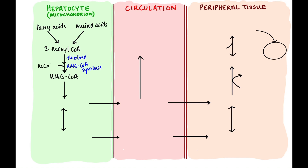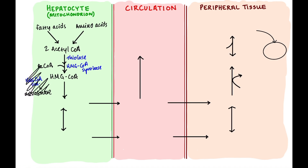Another acetyl-CoA comes in to make HMG-CoA. Now, HMG-CoA is also involved in cholesterol synthesis — there, HMG-CoA reductase makes mevalonate. But this is a completely different process and has nothing to do with ketone bodies. What I want you to think of here is HMG-CoA synthase, because that's the most important step in ketone body synthesis.